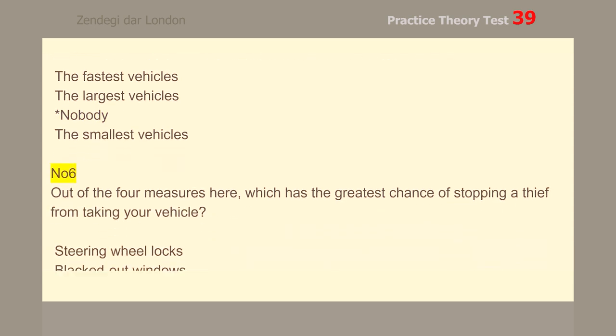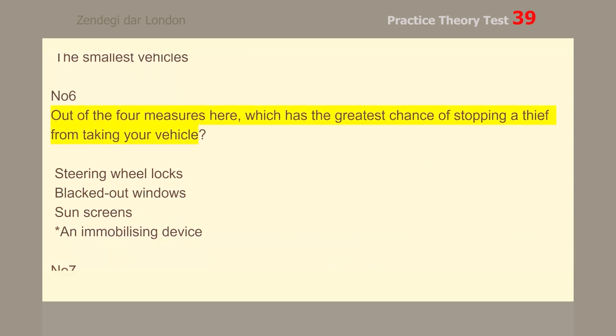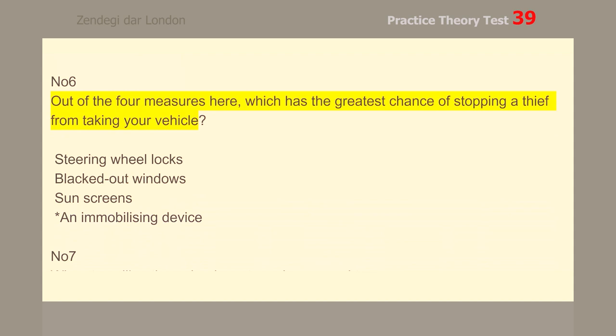Number 6. Out of the four measures here, which has the greatest chance of stopping a thief from taking your vehicle? An immobilizing device.